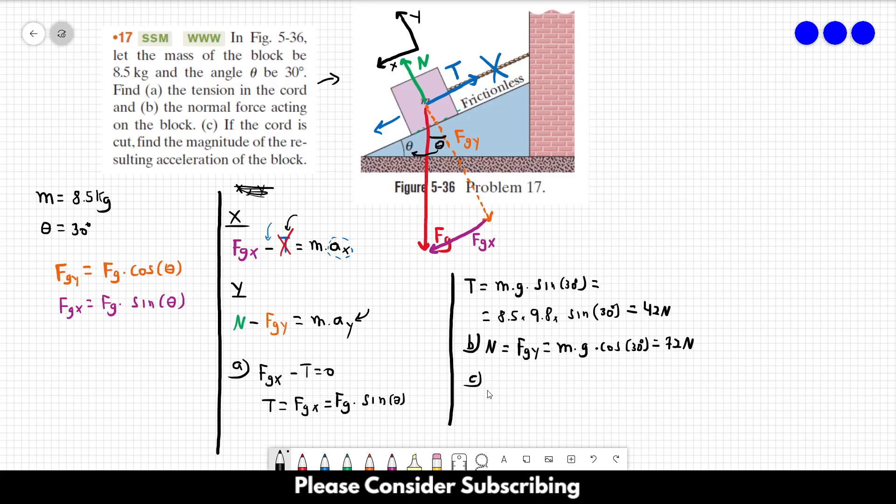So we have that FG_X = m × a_x. So a_x = FG_X / m, which is equal to (m × g × sin(30°)) / m. We can cross out the masses.